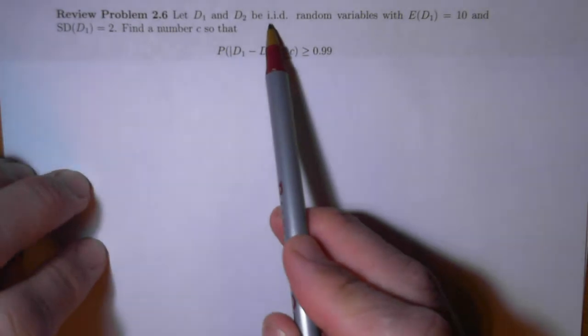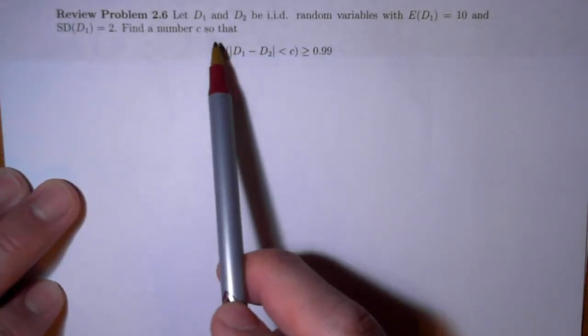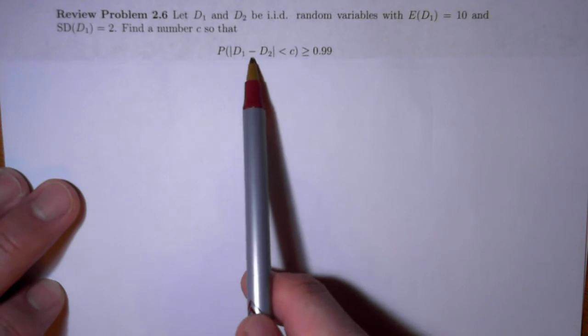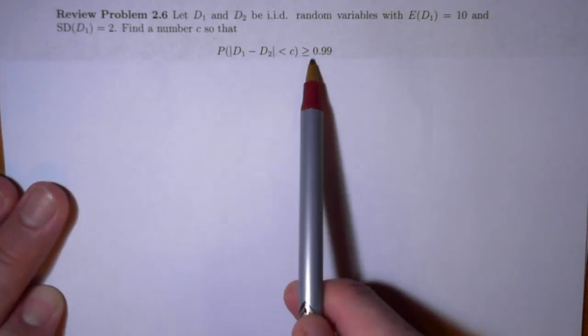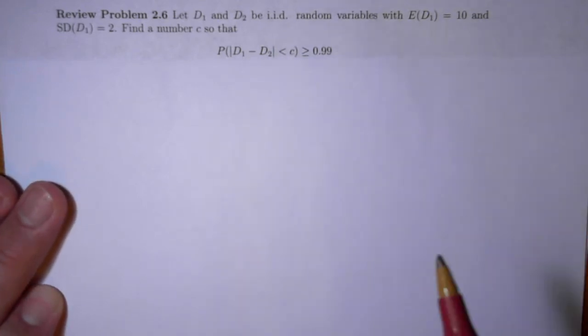So IID, independent and identically distributed. Find a number C so that the probability that D1 minus D2 is less than C is greater than or equal to 0.99.